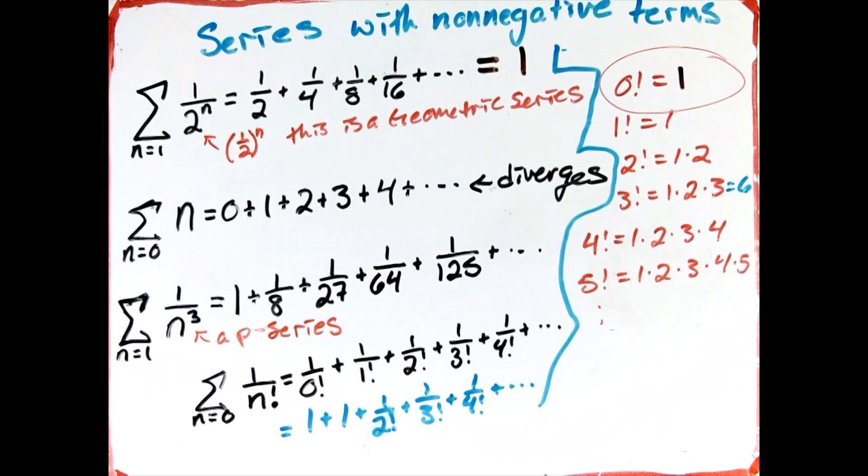These are just a few examples of series with non-negative terms. So remember, your series can have zero in it when you have non-negative terms.